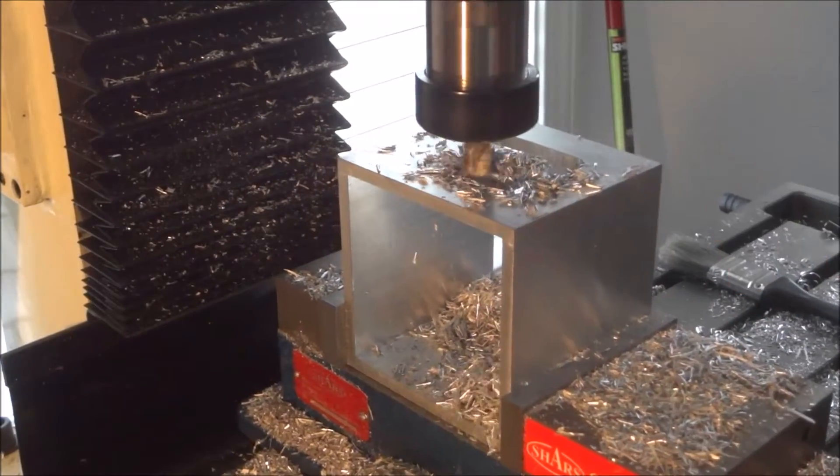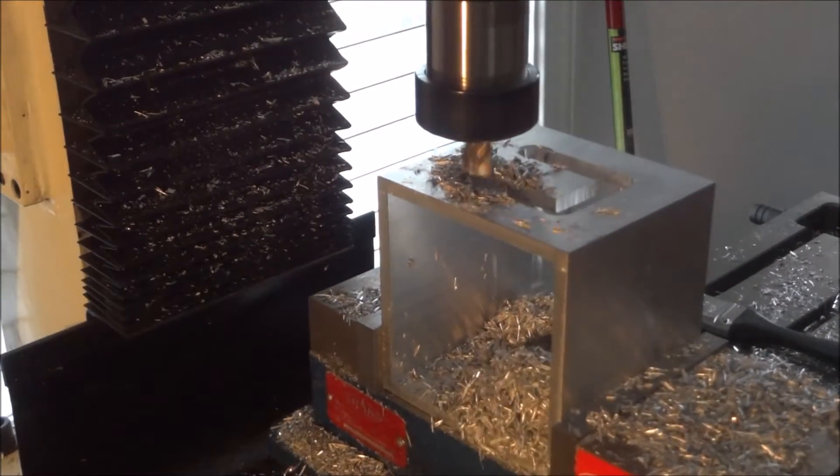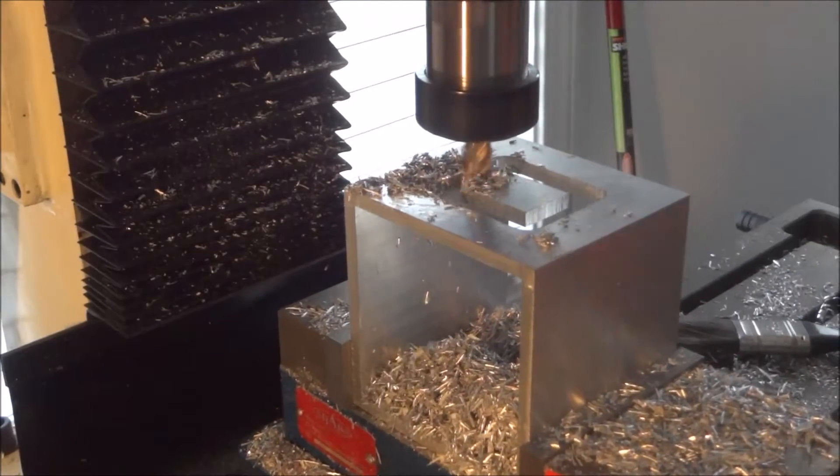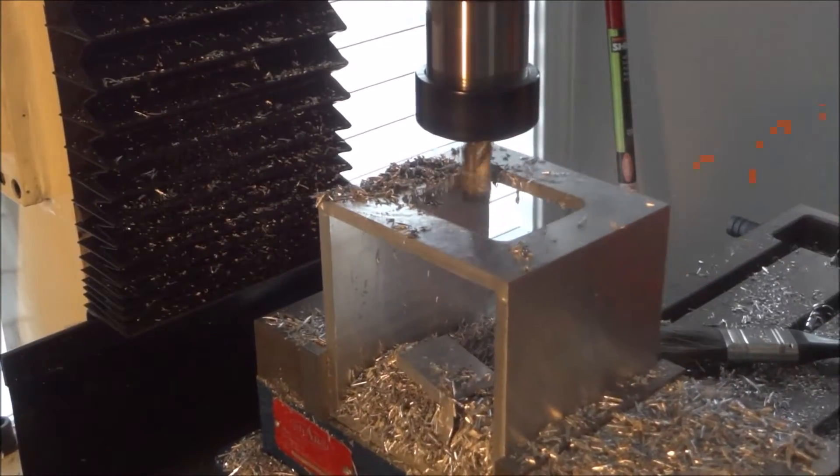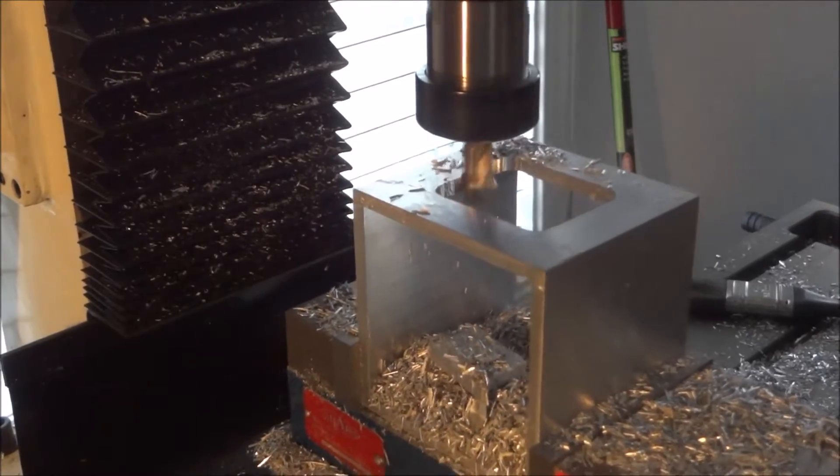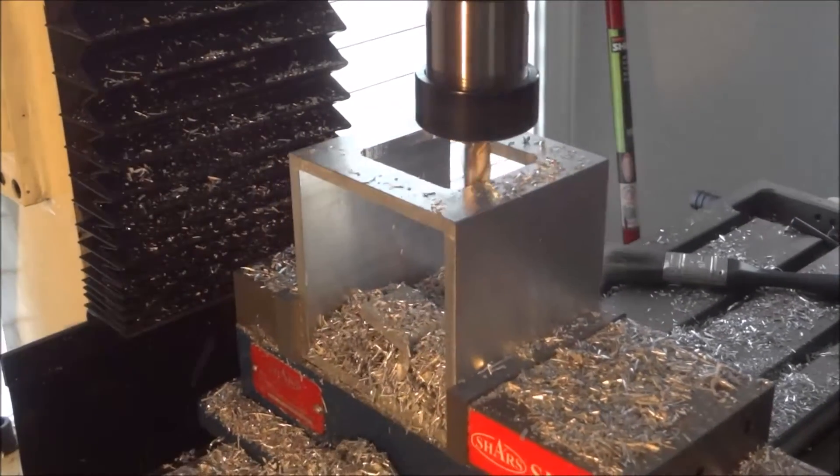Once I plunged through with the quarter inch I just went around the square and roughed it out, then came back and cleaned these edges up. Again this is a half inch four flute end mill, did a really good job and you can see we've got quite a good sized pile of shavings there, but she plowed through it just fine.